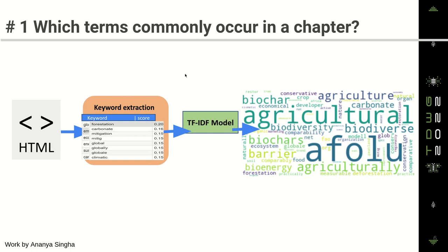For instance, we can check what are the most common keywords in a particular context, and then also how they compare across the corpus — like all of the chapters or all of the IPCC reports.